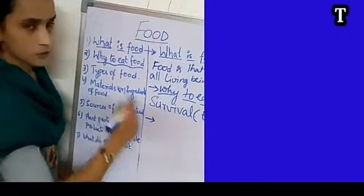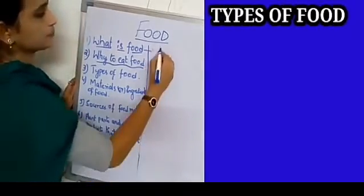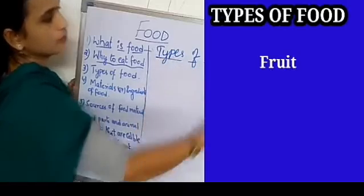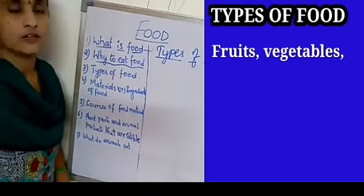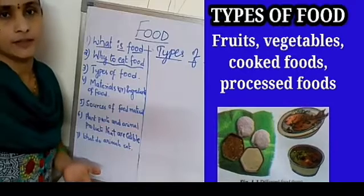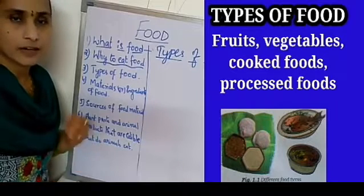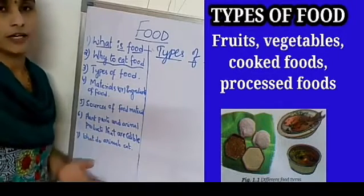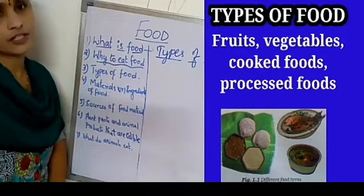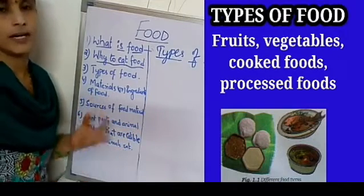The next point is types of food. We know so many types of food in our day-to-day life. Do we eat the same kind of food daily? No, we cannot eat the same kind of food daily, because the same kind of food will not give us all the nutrients required by our body. We eat different types of food at different times. In different regions, people eat different types of food, and also according to their taste.